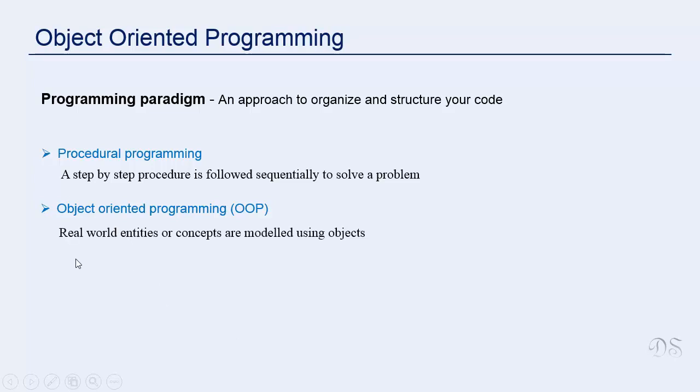In object-oriented programming, real-world entities or concepts are modeled using objects. An object has both state and behavior, means it contains both data and code to manipulate that data.